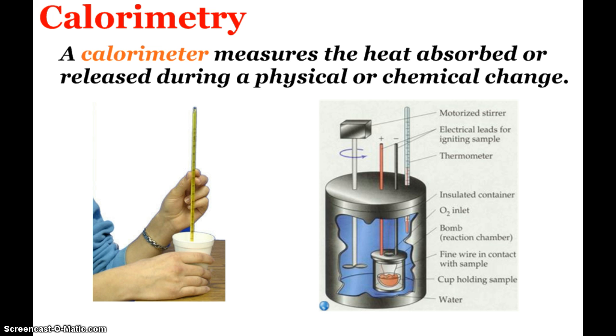So again, calorimetry. A calorimeter is anything that measures the heat absorbed or released during a physical or chemical change. Again, a lot of us are using just the coffee cup style. A bomb calorimeter, you can watch a little YouTube video if you'd like. But essentially, it's got a sealed chamber, combustion reactions going on. You heat up what's going on in there. Oxygen is being supplied. The bomb, the chamber, is surrounded by water that's constantly being stirred and the temperature is being measured.